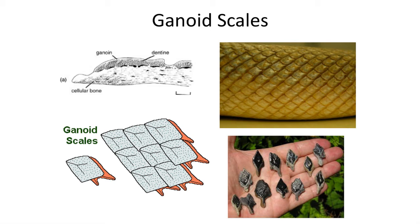They are often diamond-shaped and found in abundance in many Mesozoic and Cenozoic strata, particularly in freshwater fluvial deposits.